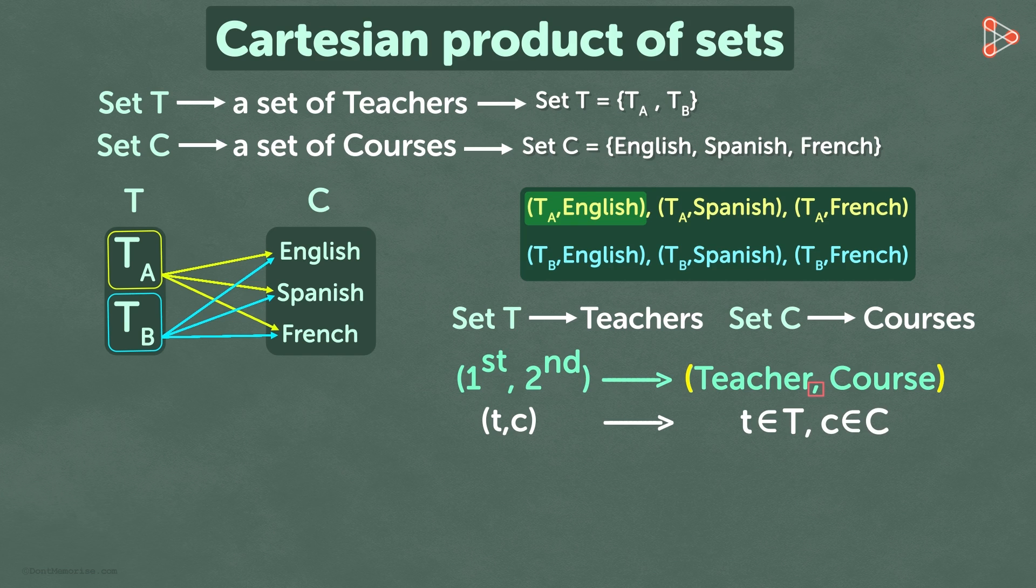Now, why do we use round brackets? This is because the order in which we write within the round brackets matters. Here's the explanation.